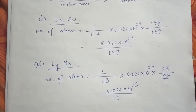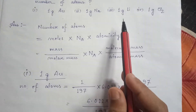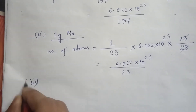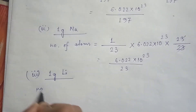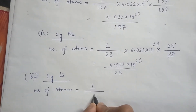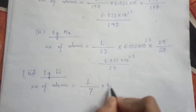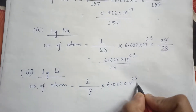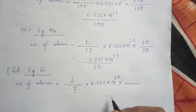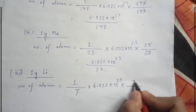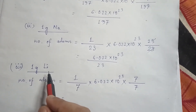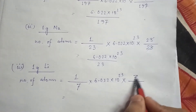Now take the next option — one gram of lithium (Li). Number of atoms = (mass ÷ molar mass) × Avogadro number × atomicity. Mass is 1g, molar mass is 7. Only one atom is present, so molecular mass and atomic mass are the same — 7 ÷ 7 = 1. The answer is 6.022 × 10²³ ÷ 7.